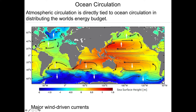Easterly trade winds at low latitudes, middle latitude westerlies further up — the same pattern goes in the Pacific. In the southern hemisphere, the opposite scenario takes place because the winds blow in opposite directions at specific latitudes. These are known as the major wind-driven currents.